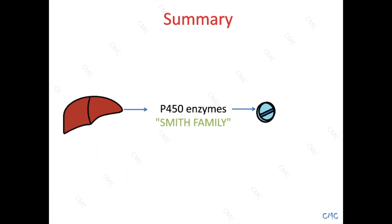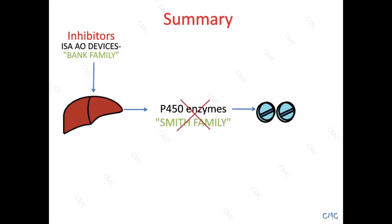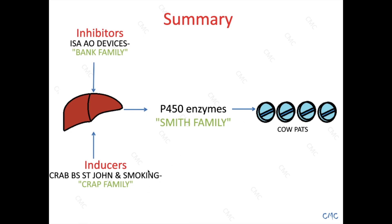On the other end of the scale, the inhibitors — the bank family, who's trying to bank on every little penny — are trying to hold on to the medication. Therefore, they stop the Smith family, the P450 enzymes, and the drug that you put in is not metabolized but accumulates and results in toxic side effects. Overall, the inhibitors and inducers, the bank family and crap family, work on P450 enzymes, the Smith family. And the Smith family metabolizes the drugs, with a significant effect in particular on the COWPADS medications.